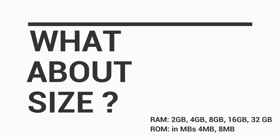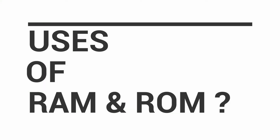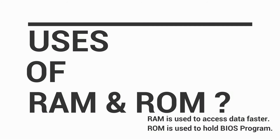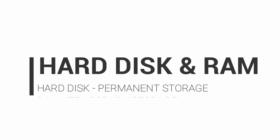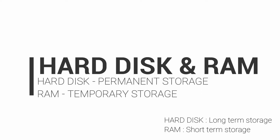RAM is used to hold active processes and is used for temporary purposes. The more RAM you have, the more things your computer can do at the same time. RAM plays an important role in booting up the system, as the BIOS program is located in ROM. It is important to remember not to confuse hard disk with RAM. A hard disk is a storage device that permanently stores data until you delete it, whereas RAM stores data temporarily.